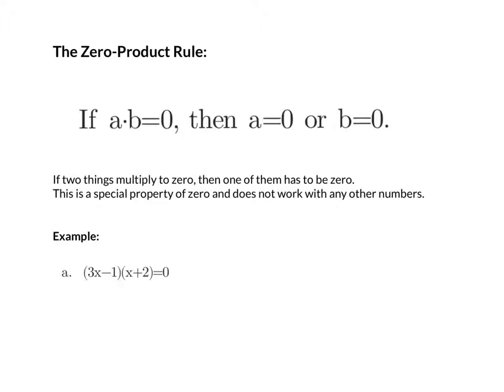Let's go ahead and look at a base case example that has already been factored for us. In example A, we have 3x minus 1 times x plus 2 equals zero. So what we want to do is set each one of these factors — the first thing will either equal zero, or the second thing will equal zero.